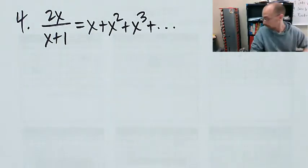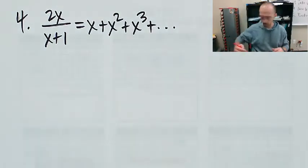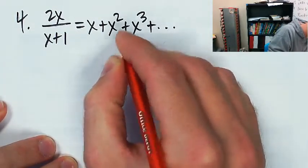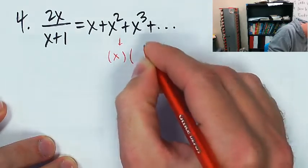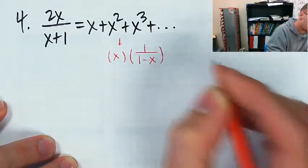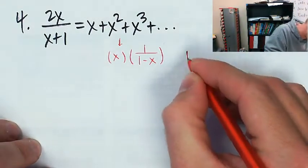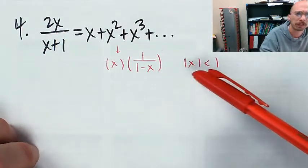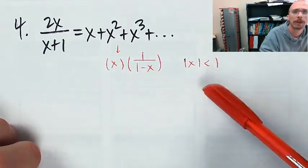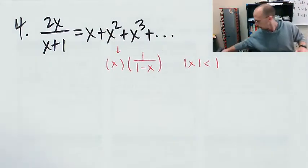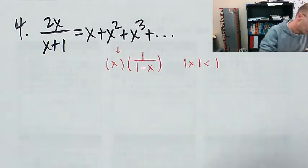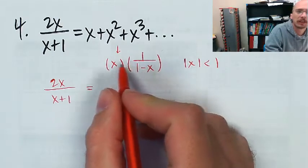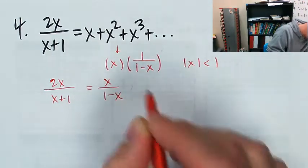This is a geometric series with first term X and common ratio also X. So the total sum will be X times 1 over 1 minus X. This makes the assumption that the absolute value of X is less than 1. So I'm going to say 2x over x plus 1 is equal to X over 1 minus X, then I'll cross multiply.